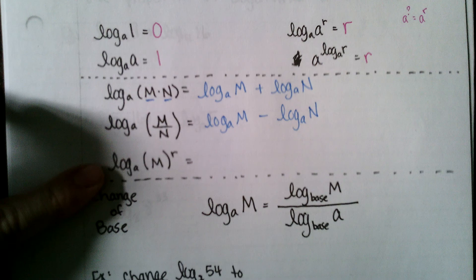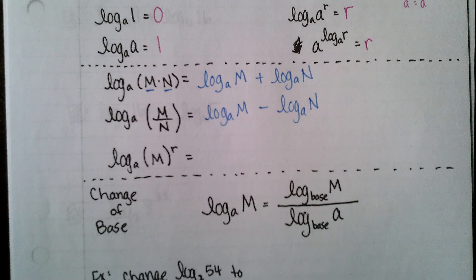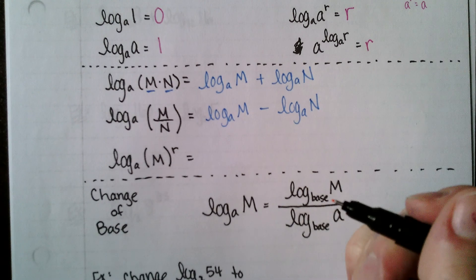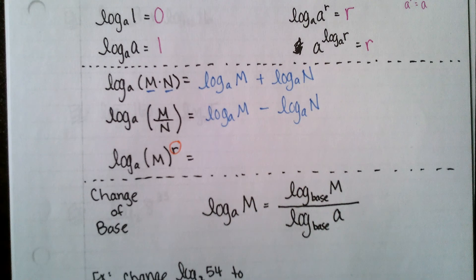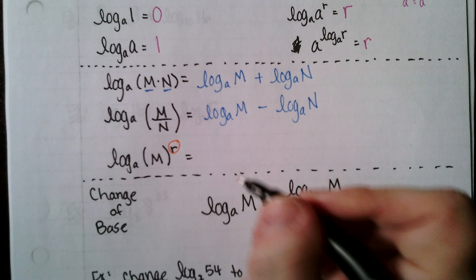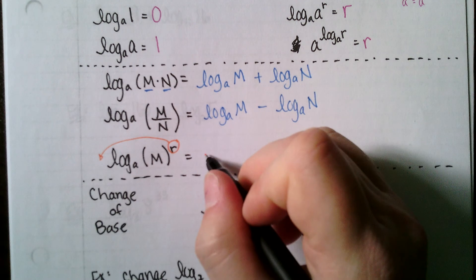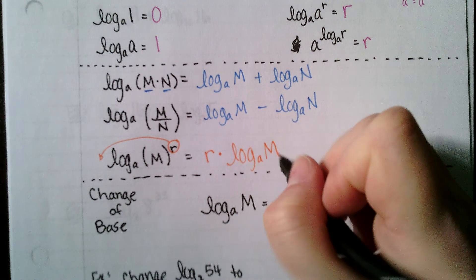Then we have the power property of logarithms — my favorite because it makes things so much simpler. It allows us to change from having something raised to a power to having something multiplied. If I have a log with the argument raised to a power r, I can bring that power down in front as a product: r times log base a of m.